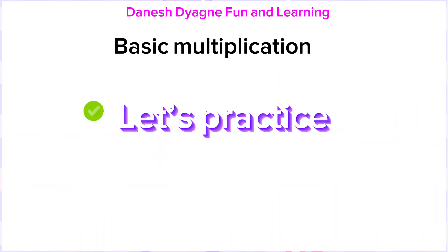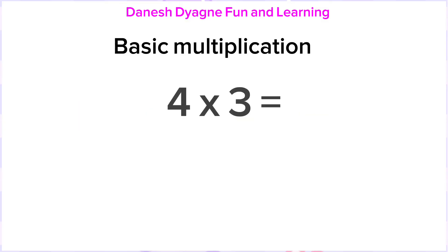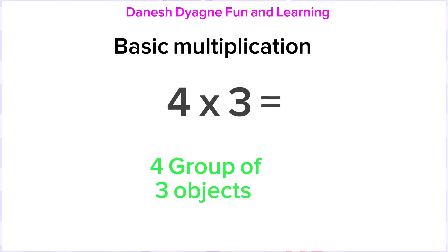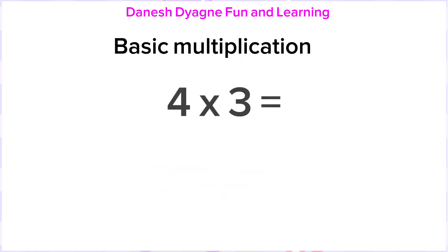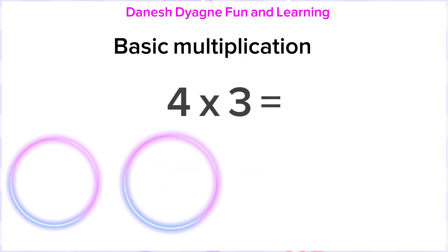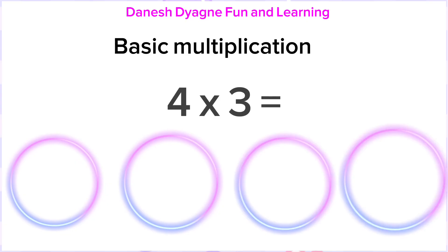Three times three equals nine. Let's practice. Four times three, or four multiplied by three. So we need to make four groups of three objects. Let's make four groups first. One, two, three, four. Now we need to put three objects in each group.